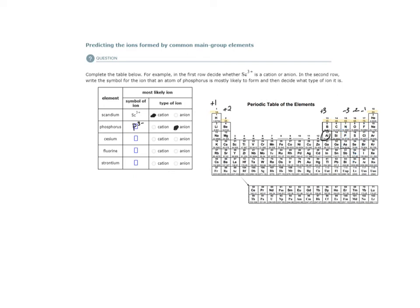So cesium, we'll write its element symbol which is CS, and 1 plus. It's a cation. All of these metals are going to form cations; these non-metals, anions.